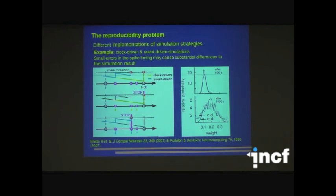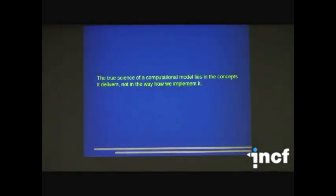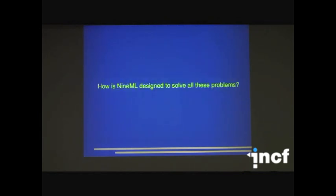If you let the network run for 1000 seconds and look at the distribution of synaptic weights, this is how it looks for event-driven simulation, shown in a black curve. And for clock-driven simulation with different time steps are shown in other curves. You can see that the distributions are significantly different. The true science in computational models lies in the concept that it delivers, not in the way how we implement it. It's a technical detail. Unfortunately, many computational neuroscientists spend too much time fighting with those implementation details.